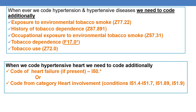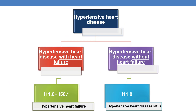In the current session, we will be discussing about the codes for hypertensive heart and hypertensive heart with CKD. Whenever the patient has hypertensive heart, along with the code for hypertension, you need to code an additional code for heart failure under subcategory I-50, or if the patient has any heart involvement conditions categorized under subcategories I-51.4 to I-51.7, I-51.89, or I-51.9.